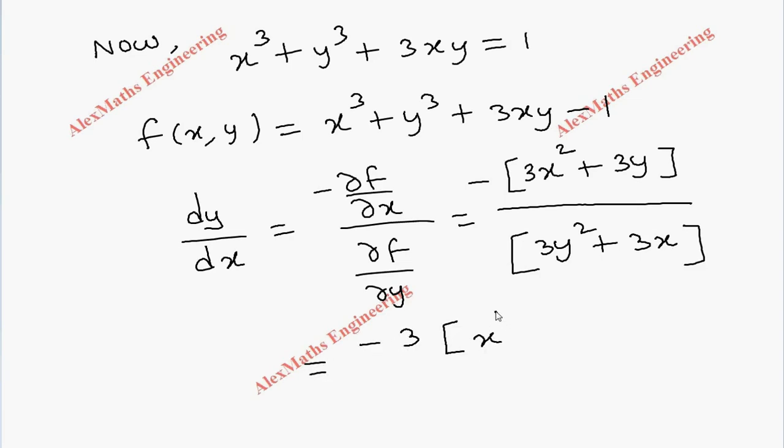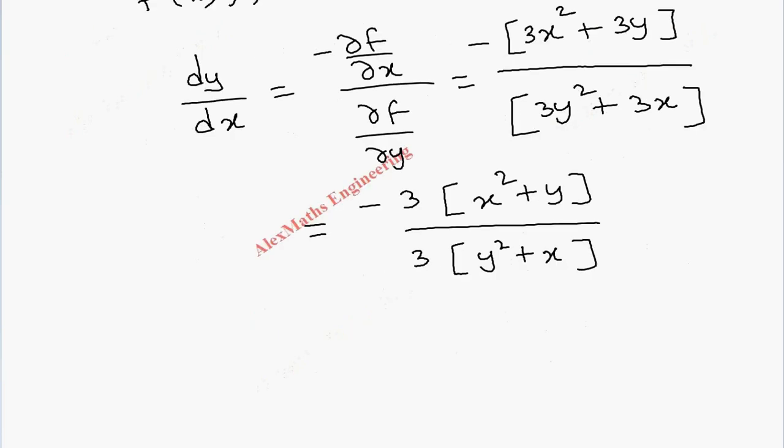So after taking 3 common, we can cancel. So x square plus y is remaining in the numerator. Here y square plus x is remaining in the denominator.